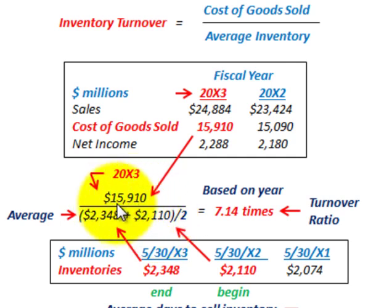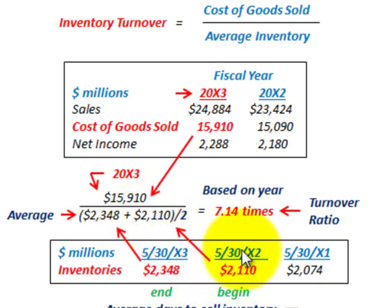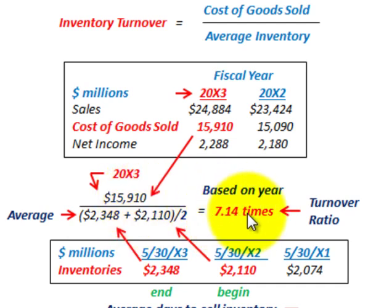To compute the inventory turnover ratio, we divide cost of goods sold by average inventory. The ending inventory at 5/30/x3 was $2,348,000 plus the beginning inventory at 5/30/x2 of $2,110,000 — sum those and divide by two to get the average. Dividing cost of goods sold by that average inventory gives us 7.14 times as the turnover ratio for 20x3.